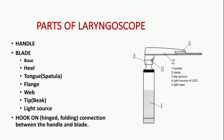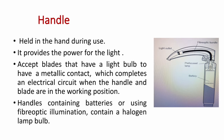The laryngoscope has different parts: the handle, the blade, and the hook. The handle is held in the hand during use and provides power for the light. It accepts blades that have a light bulb and a metallic contact which completes an electrical circuit when the handle and blade are in the working position. Handles containing batteries or using fiber optic illumination contain a halogen lamp bulb.